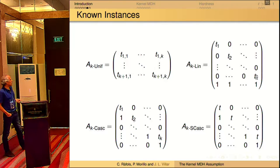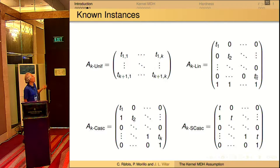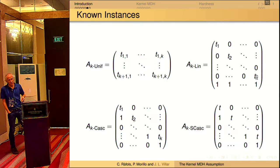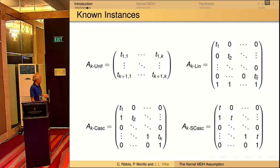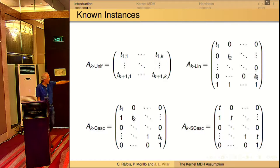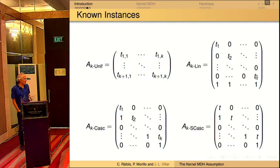There are several instances of this MDDH problem: the uniform matrix and the linear, but also the cascade and the symmetric cascade were considered. The number of parameters is very different, although the size of the matrices is comparable — all sizes are identical here. We can range from a fully randomized matrix with K times K plus one parameters to a matrix with a single parameter, which has a very compact representation because to specify the matrix, you only have to store one group element.